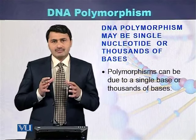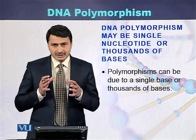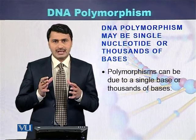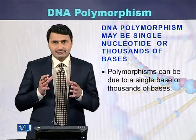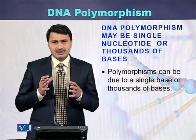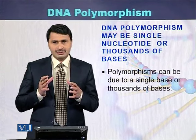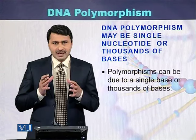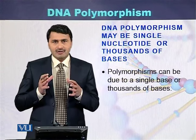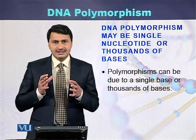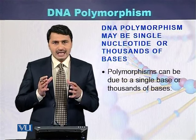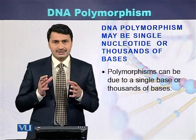DNA polymorphism can involve a single nucleotide or thousands of nucleotides. In the case of single nucleotide polymorphism (SNP), there is a variation at just one point of the DNA, while in the case of VNTR, there can be a variation of more than 8 or fewer than 50 nucleotides.